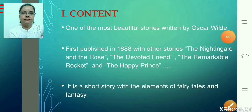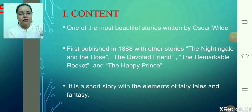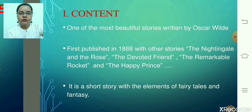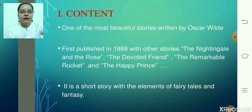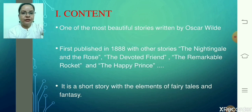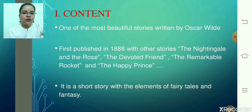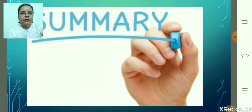Dear students, I'm not going to tell you about Oscar Wilde in detail — that's a task for you. You have to find out the detailed biography of Oscar Wilde and write a short note on it in your notebooks. This chapter, 'The Selfish Giant', is one of the most beautiful stories written by Oscar Wilde. It was first published in 1888 along with other stories: 'The Nightingale and the Rose', 'The Devoted Friend', 'The Remarkable Rocket', and 'The Happy Prince'. It is a short story with elements of fairy tales and fantasy.